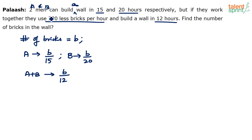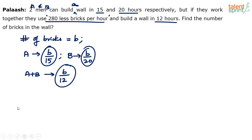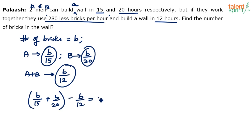Going by the given statement — they use 280 less bricks per hour — we have bricks per hour for A, bricks per hour for B, and bricks per hour for A and B together. So: B/15 + B/20 − B/12 = 280. The difference between bricks used per hour when working independently versus together equals 280.